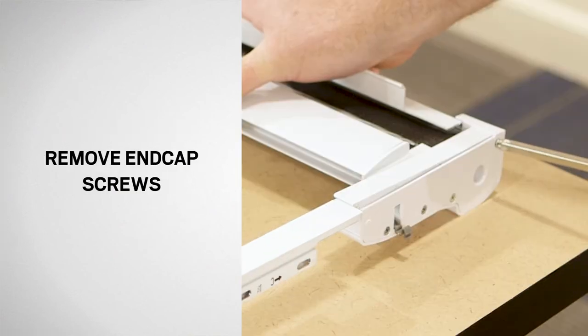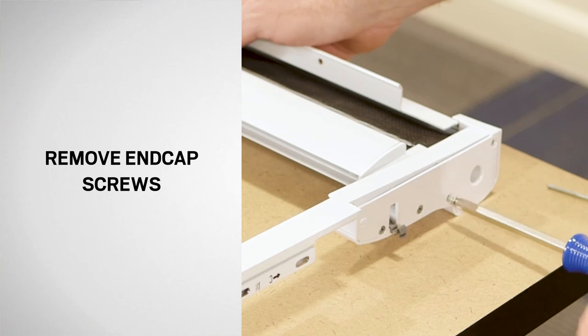Next, using a Phillips screwdriver, remove the two screws from end cap C and set aside for reuse.